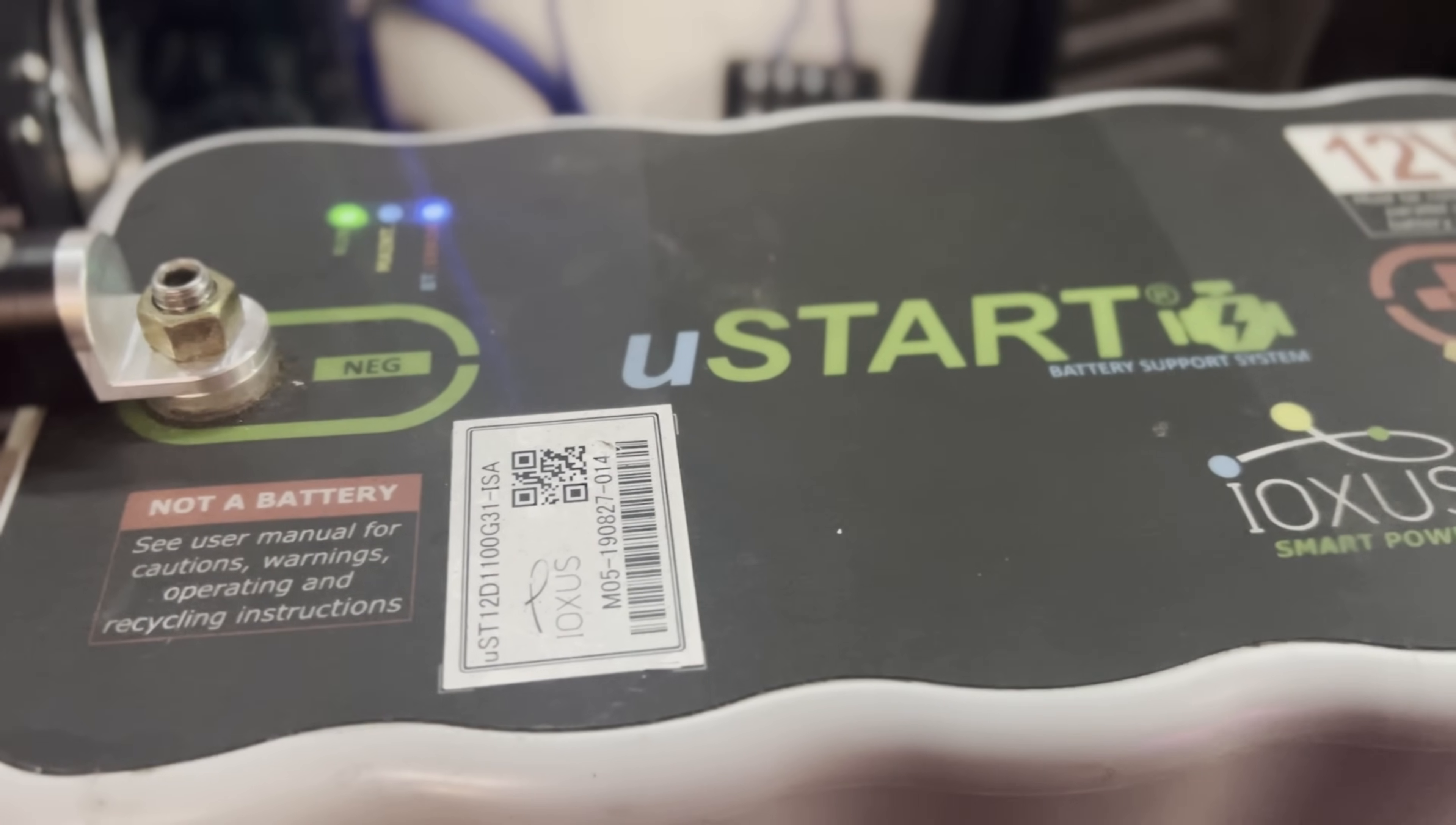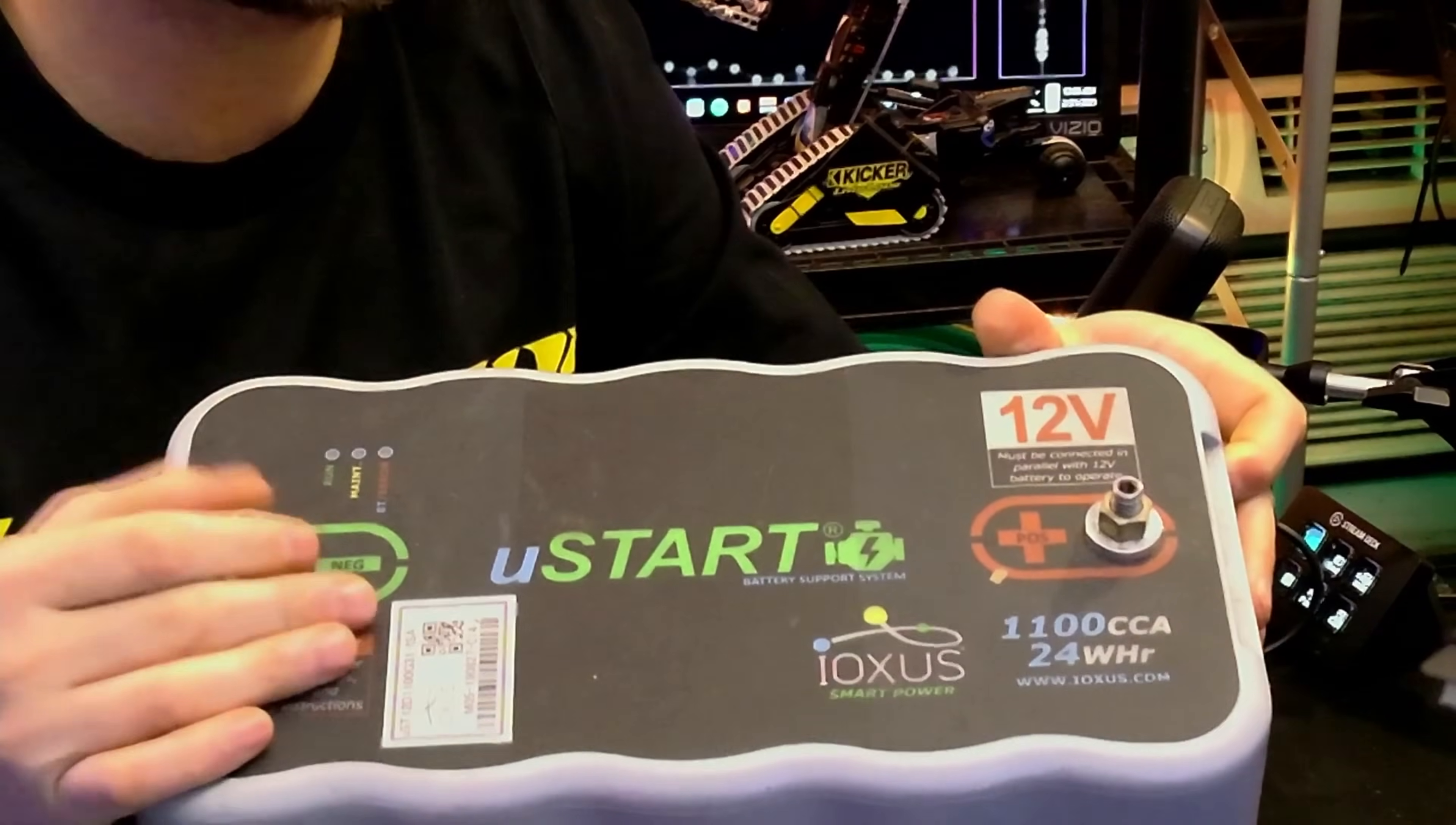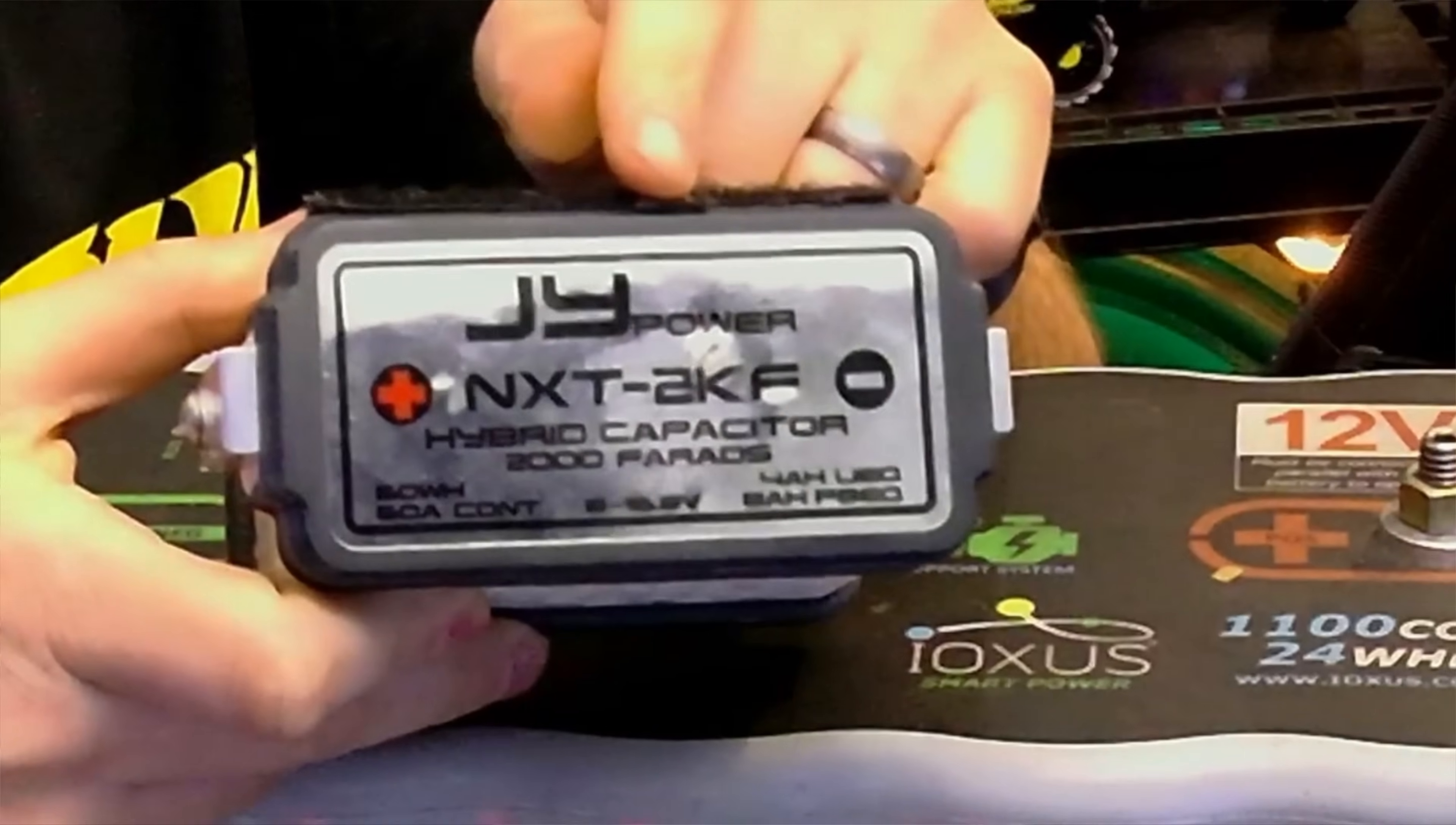We got the U-Start Ioxys 1100 cold crank amp, 24 watt hour ultra capacitor battery. A lot of people talked about this thing, but they never actually tested how much power this thing can actually generate. With this ultra capacitor, you're going to need to run a battery in line. You can't just run the capacitor itself.